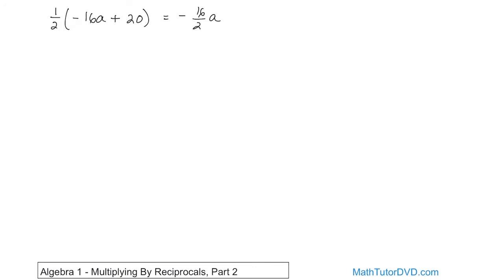The reason it's written that way is because 16 is really 16 over 1. Multiply the top numbers, you get that. Multiply 1 times 2, and you get that. The negative sign comes because of negative times positive. The a just comes along for the ride. Now we have to distribute 1 half times 20, which can be written as 20 over 2. 20 times 1 gives you this, and then on the bottom, the implied 1 times the 2 gives you this. So now we have to try to simplify that.